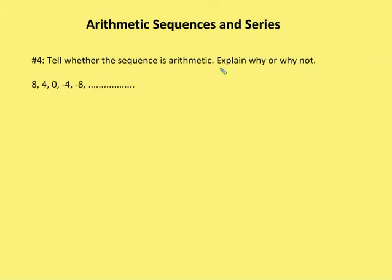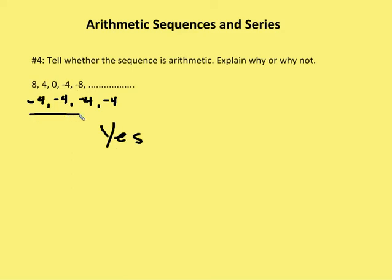In this case, the first term is eight. The next terms are four, zero, negative four, negative eight. The difference between these consecutive terms is negative four each time — negative four, negative four, and negative four. So I have a common difference between each of the terms. Yes, this is an arithmetic sequence, because by definition, an arithmetic sequence has a common difference between consecutive terms.